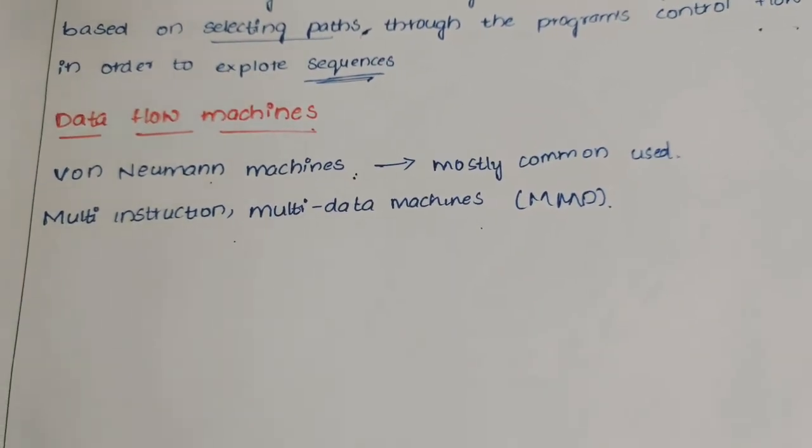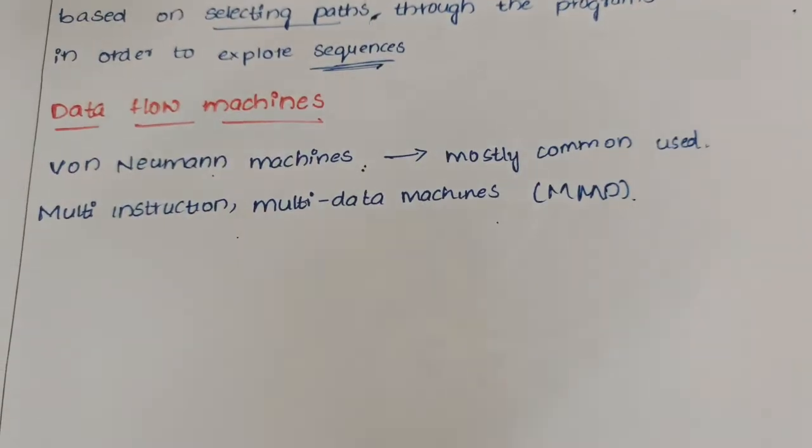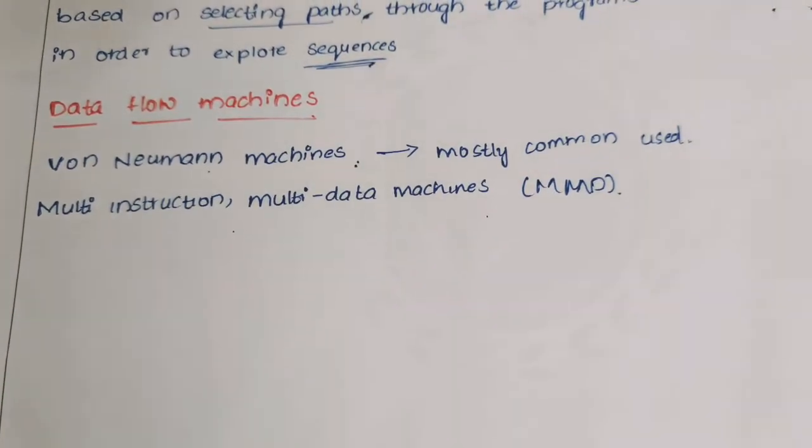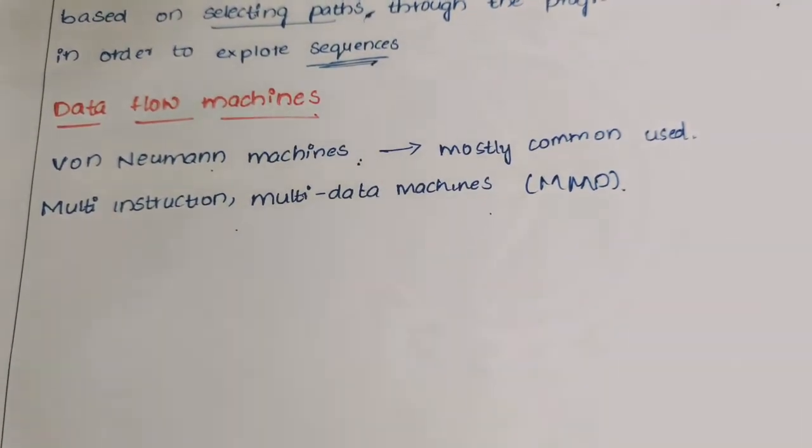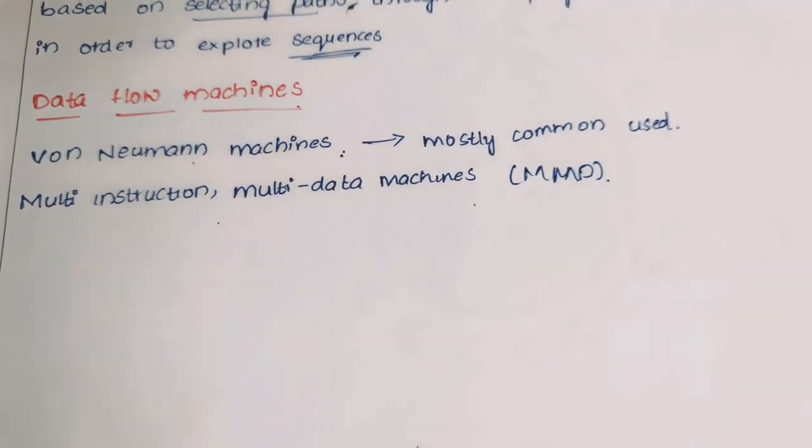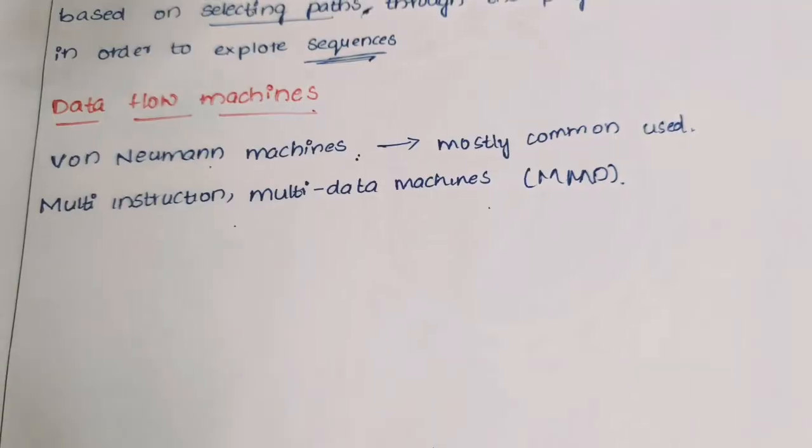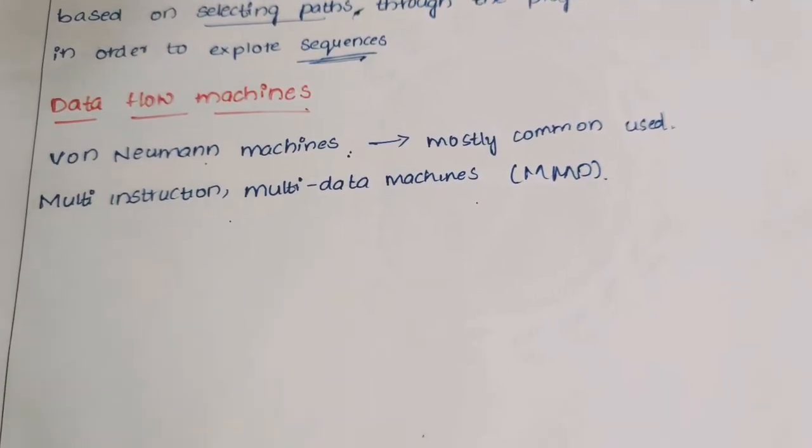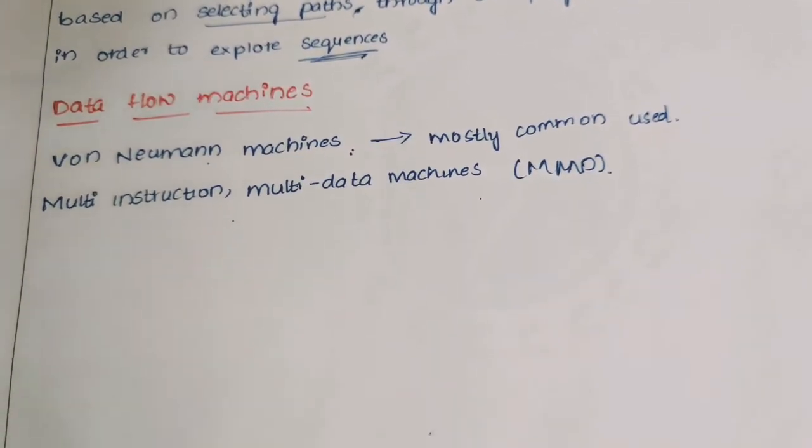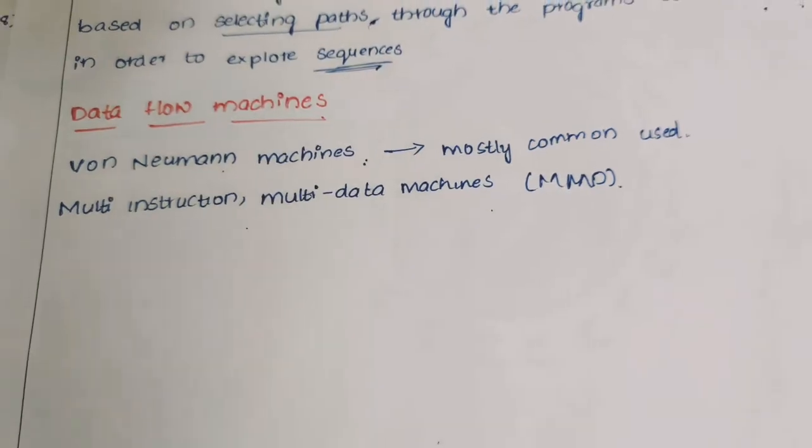Most computers today are Von Neumann machines. These families have features like interchangeable storage of instructions and data stored in the same memory units, and they execute only one instruction at a time in the following sequences.